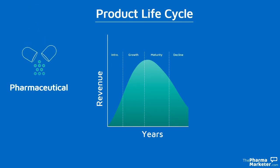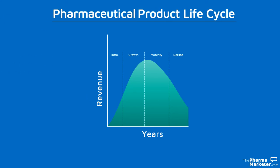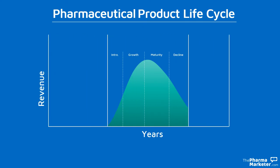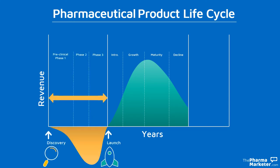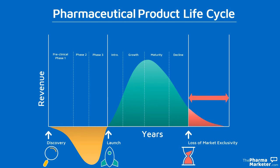When it comes to pharmaceutical products, the curve is a bit different. There are three distinctive stages in the life cycle of a new drug: the research and development stage from drug discovery up to its launch to the market; the period of time between its launch and the loss of market exclusivity; and the period after the loss of market exclusivity, when generics can enter the market. We will explore these three stages — early, middle, and late — in more detail.